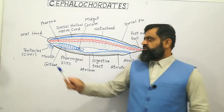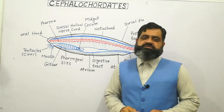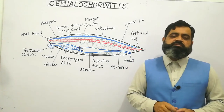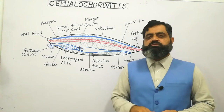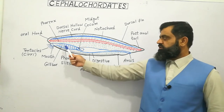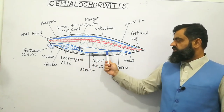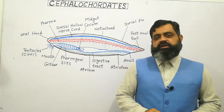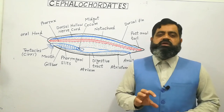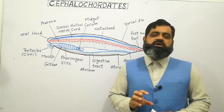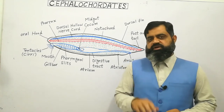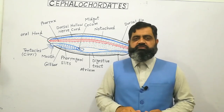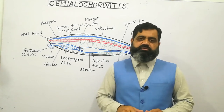If we look at the respiratory system, water enters through the pharyngeal slits. Oxygen is absorbed by the pharyngeal slits into the blood, while CO2 is removed from the body, and water exits through the atriopore. Regarding the circulatory system, they contain blood and blood vessels but do not have a heart. Instead, their blood vessels are contractile and function as a heart, pumping blood to and from different parts of the body.